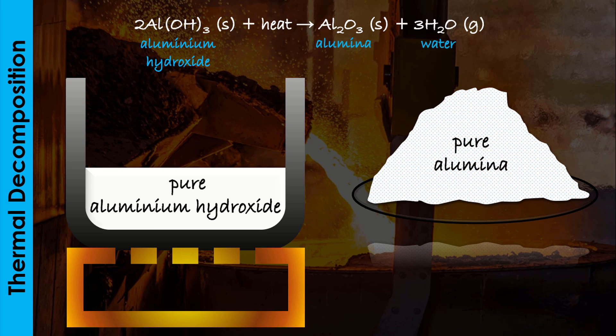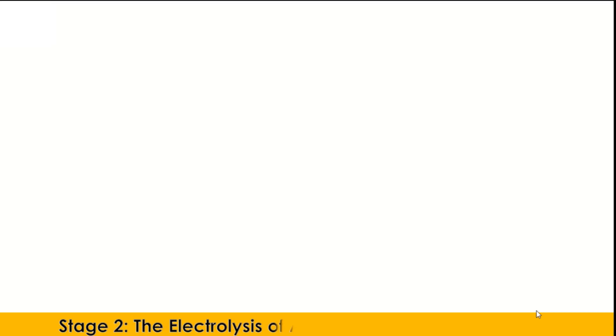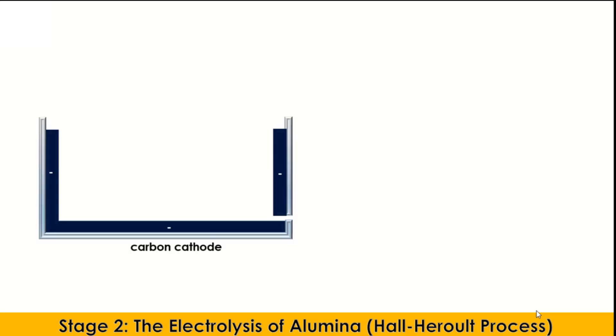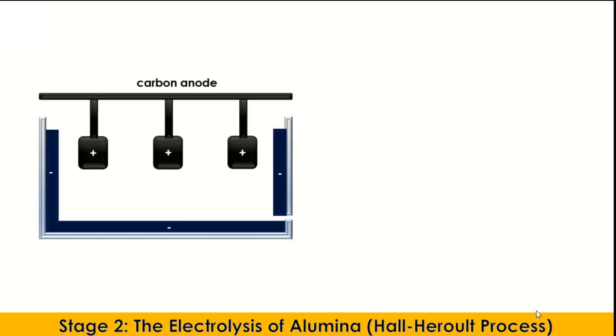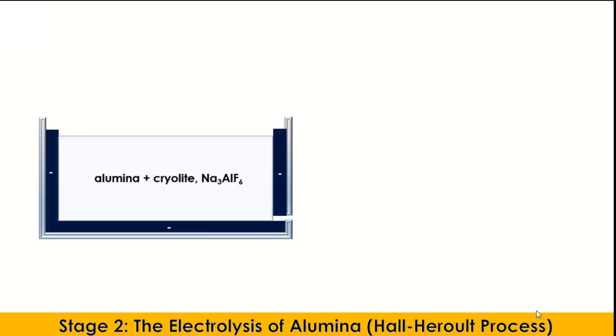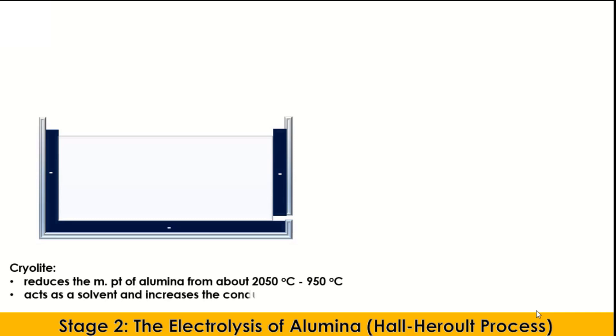The aluminum oxide is then used for the next part of the extraction process, which is the electrolysis of aluminum oxide called the Hall-Heroult process. The Hall-Heroult cell is made up of steel lined with carbon cathode, and big blocks of carbon hang in the middle of the tank and act as the anode. The electrolyte is a mixture of molten alumina and cryolite. The cryolite is added to reduce the melting point of alumina to about 950 degrees Celsius and make the process economically viable. It also acts as a solvent and increases the conductivity of the alumina.